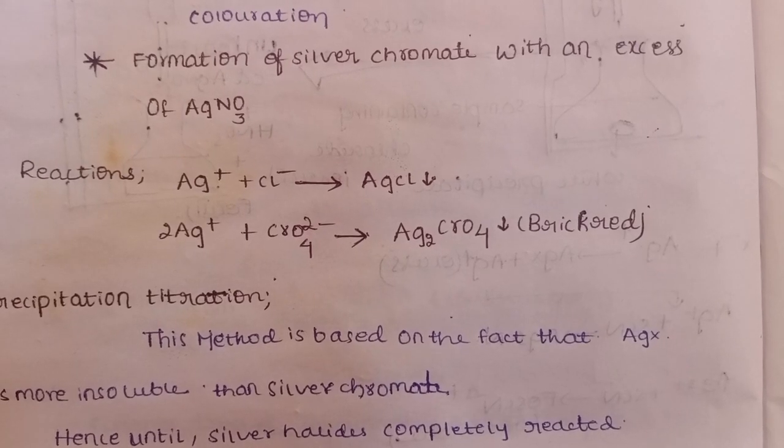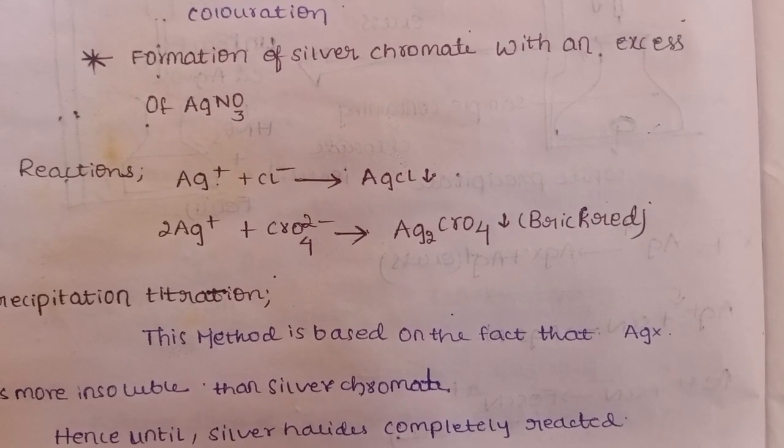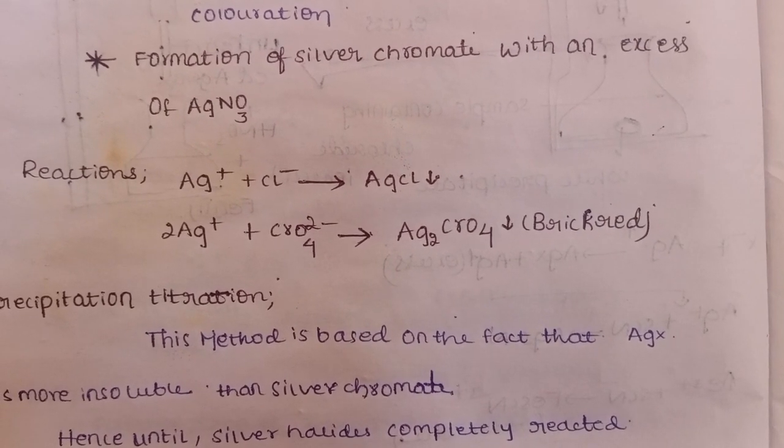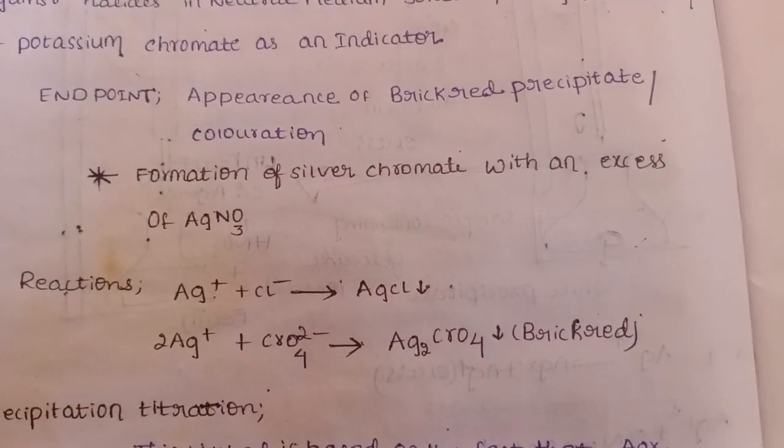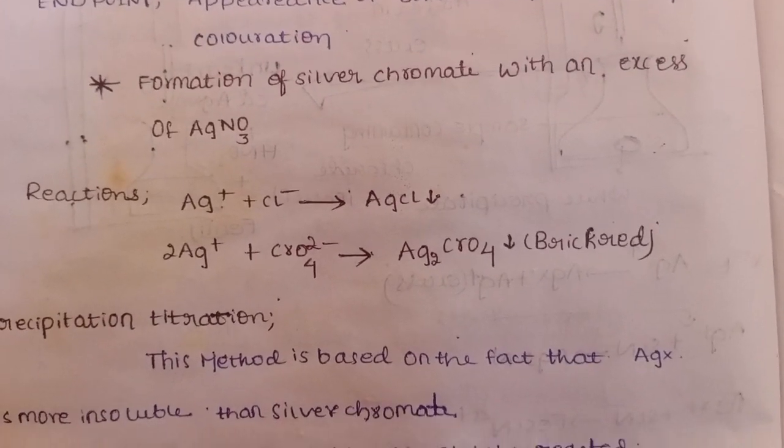With an excess of AgNO3, the leftover chromate - potassium chromate indicator - reacts to form the precipitate. This marks the endpoint.